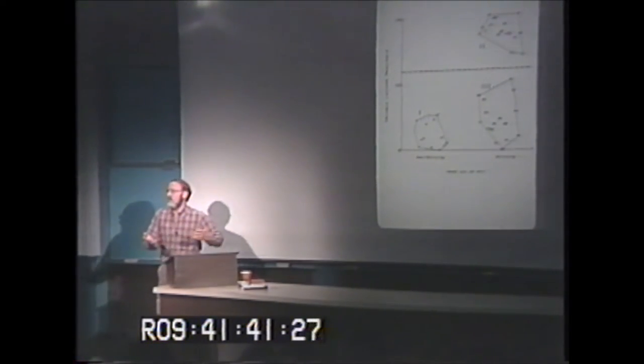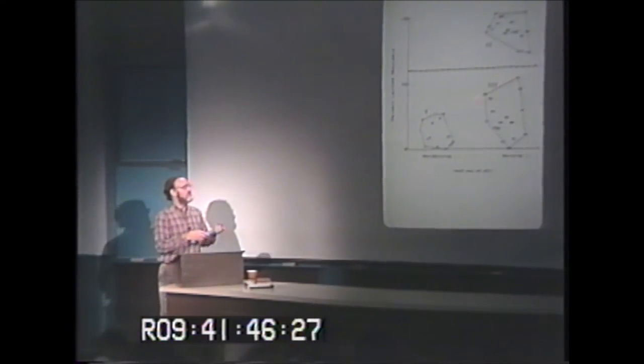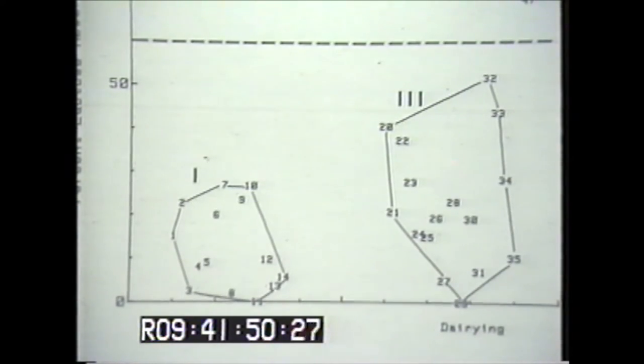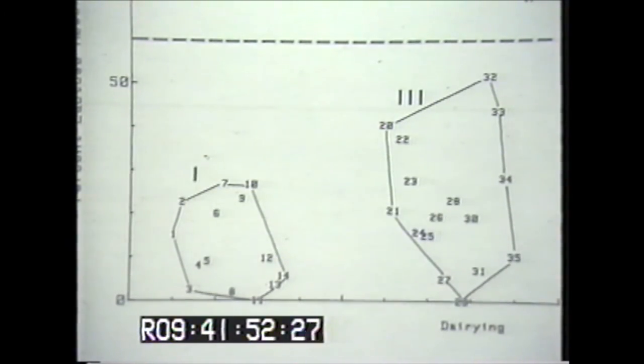McCracken and Simoons figured out there's a way around the problem. Perhaps these populations processed their milk into low lactose form, obtaining the benefit of milk without the detriment of lactose.